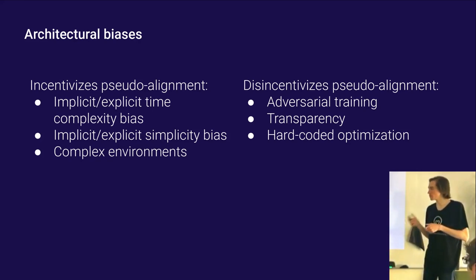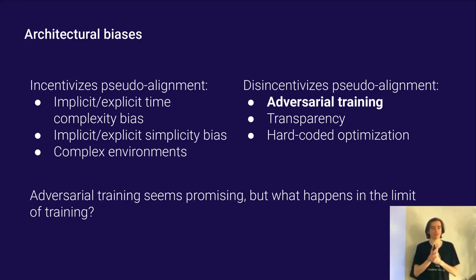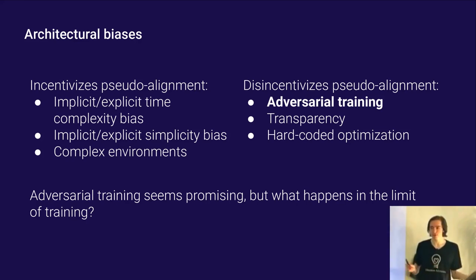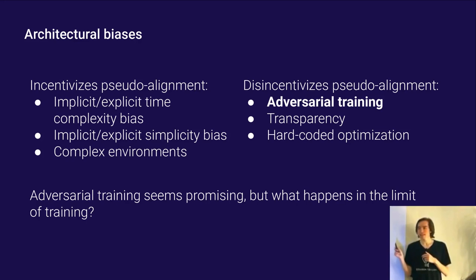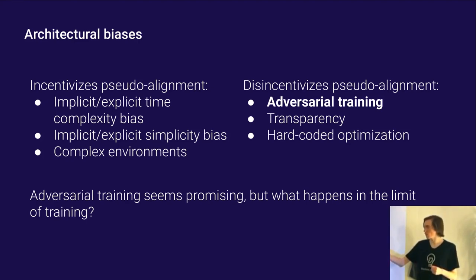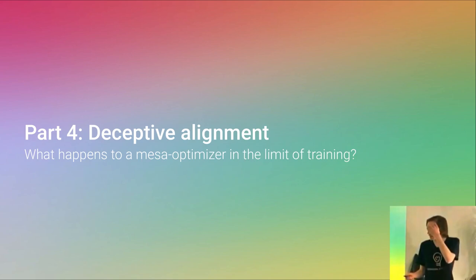What I want to talk about now is adversarial training specifically. In some sense, adversarial training is the default way to solve this problem. The maze example — we had access to the bigger maze, we could have trained on it. Why don't we just do that? I think that's a good response. But the question I want to ask is what happens if we do this? We can just generate a ton of adversarial examples and try to use those to force the model to learn to care about the correct thing. What happens? Unfortunately, I think the situation is not great.